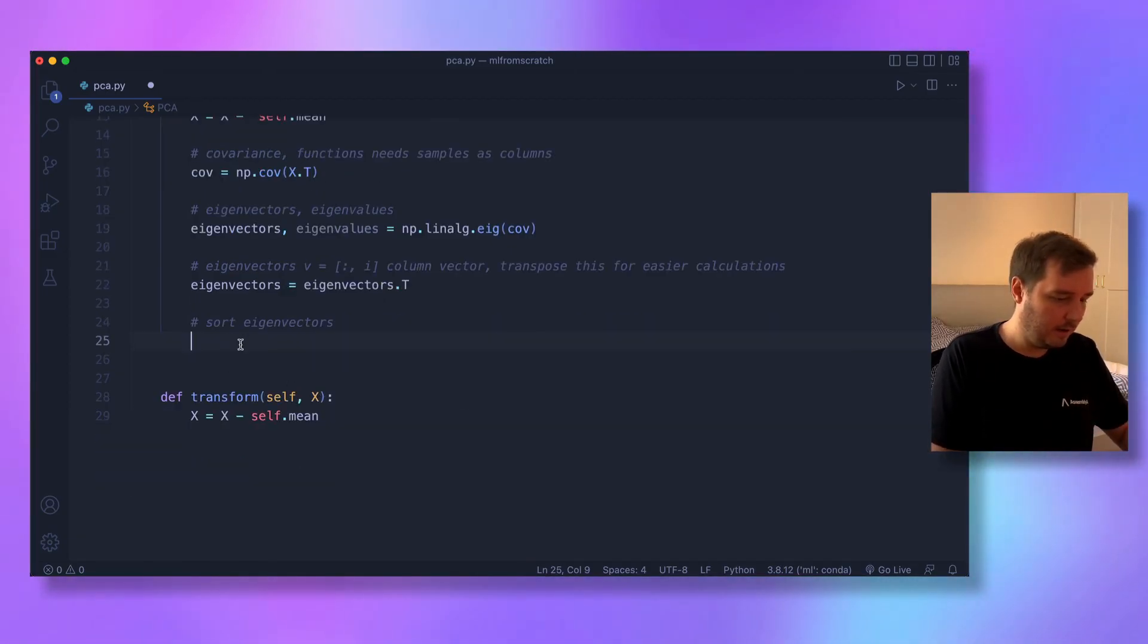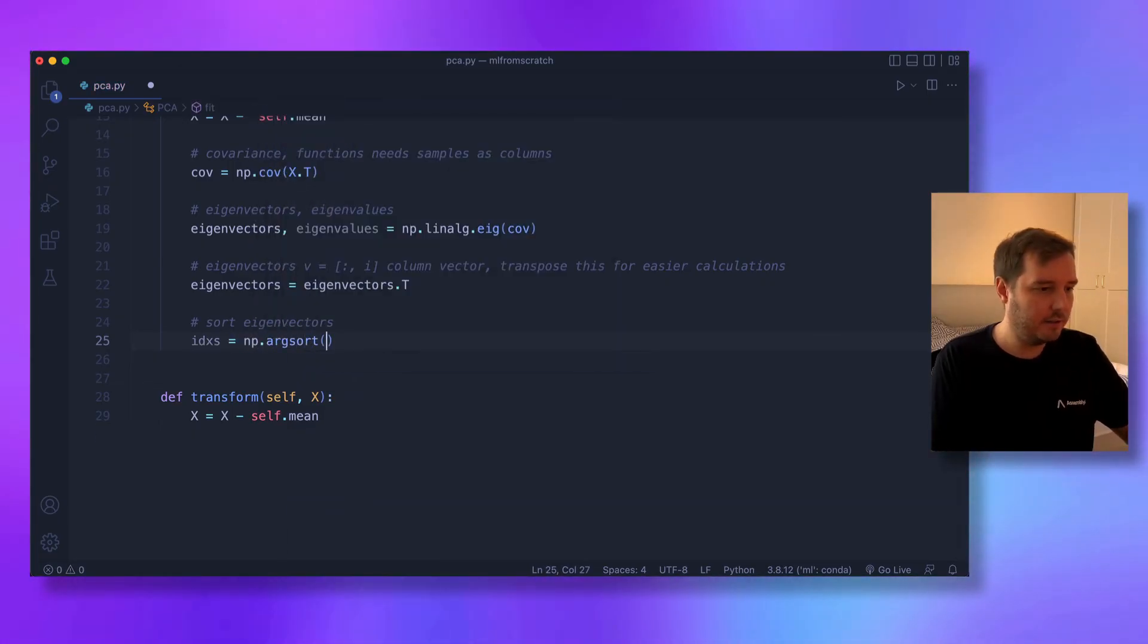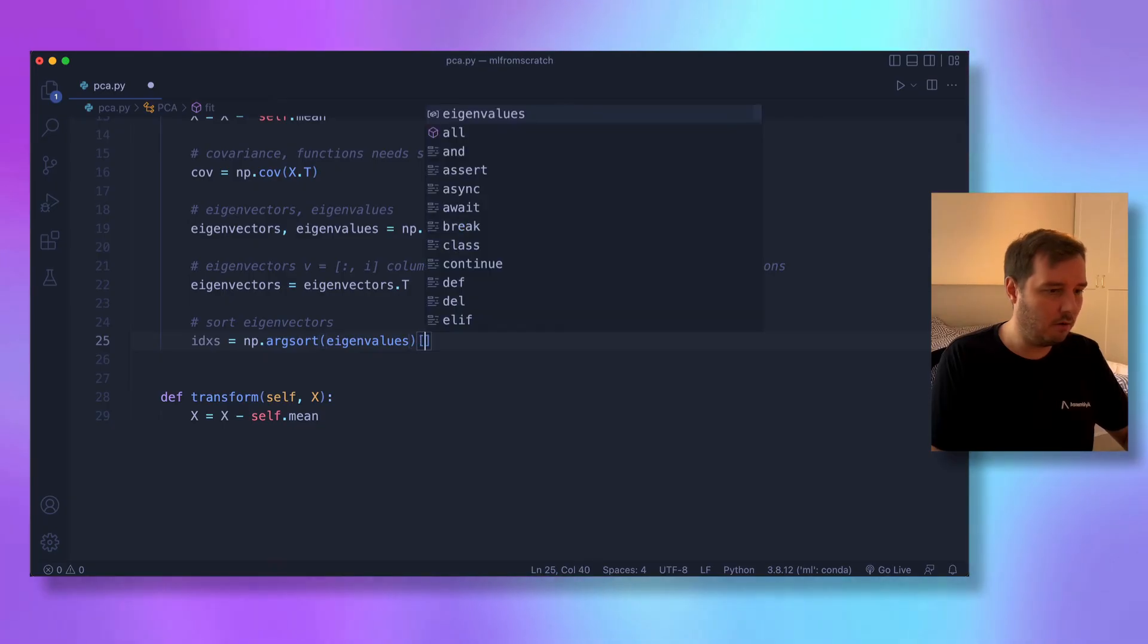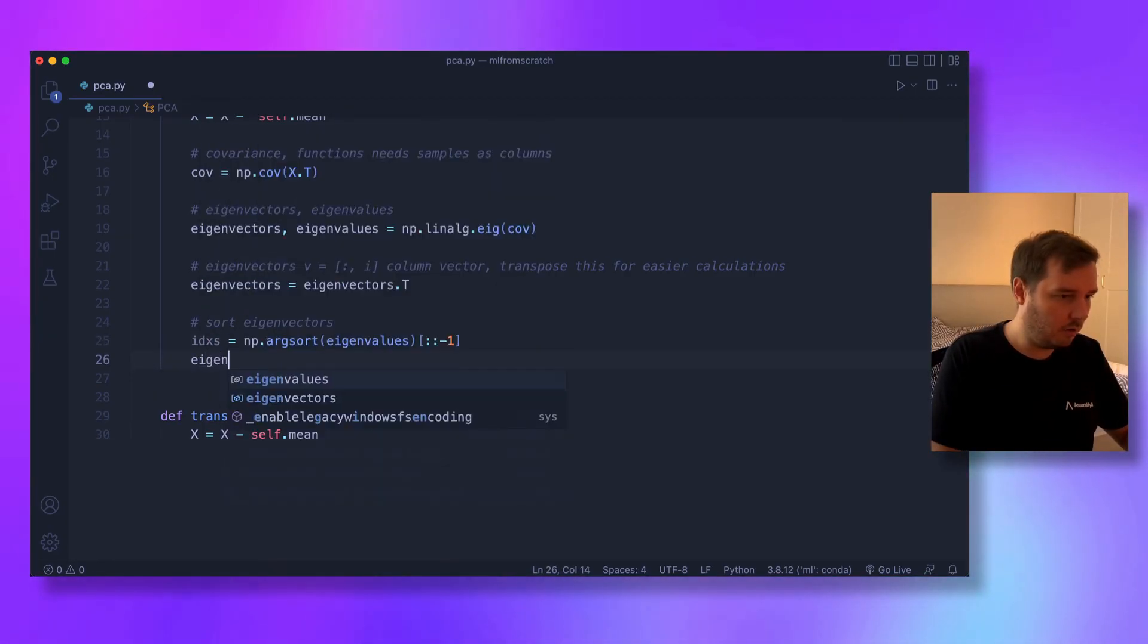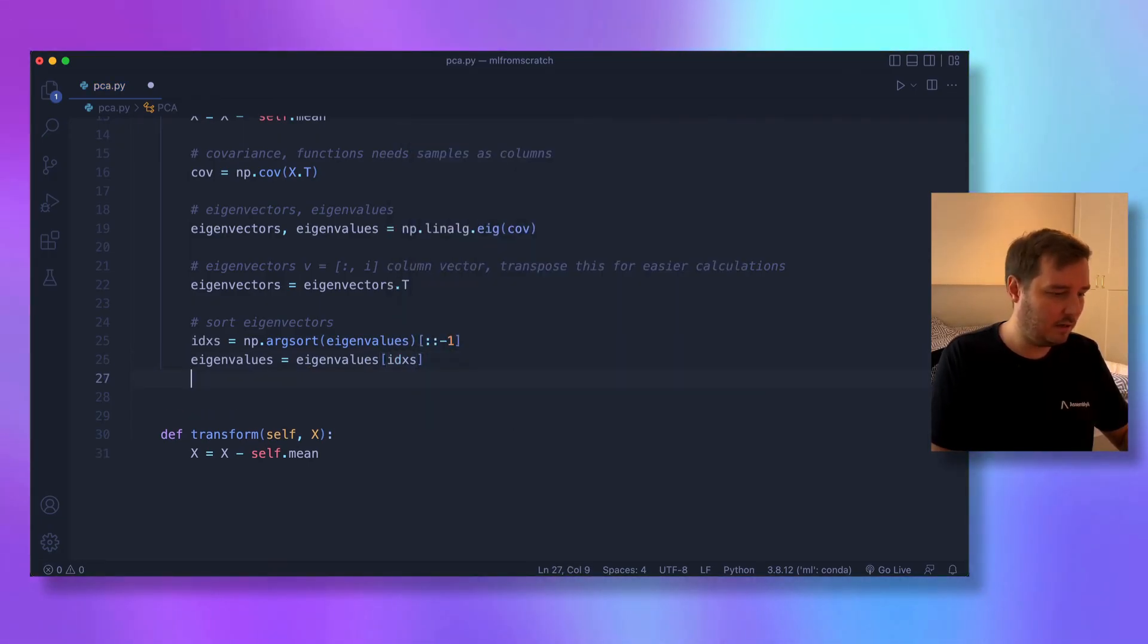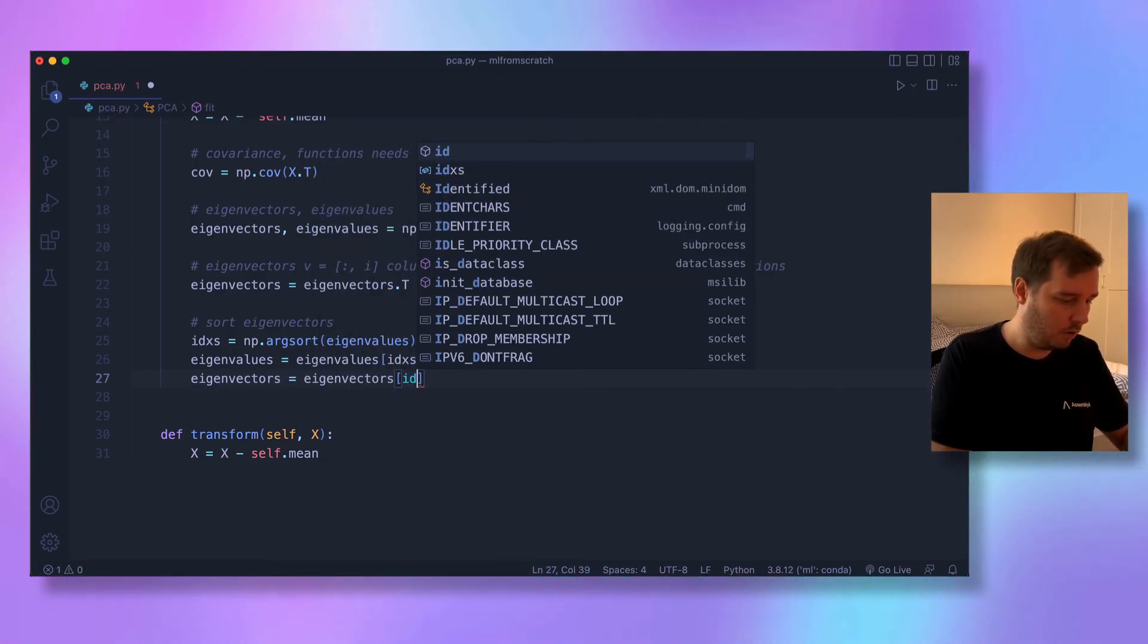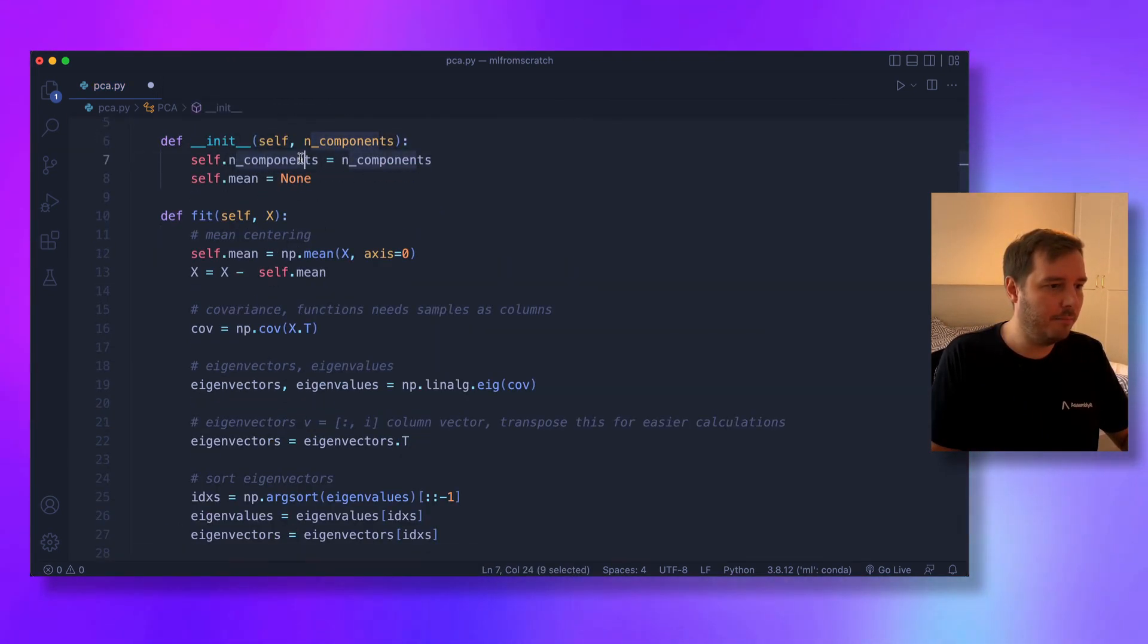We want to sort the eigenvectors according to the eigenvalues. For this, we say indices = np.argsort(eigenvalues). We want this in decreasing order, so we say [::-1]—from start to end with step minus one. Then we sort the eigenvalues: eigenvalues = eigenvalues[indices], and the same for eigenvectors.